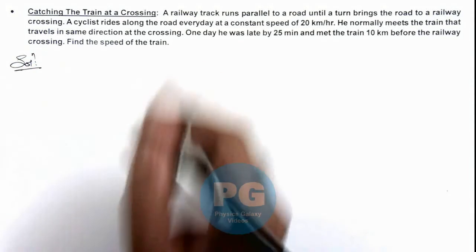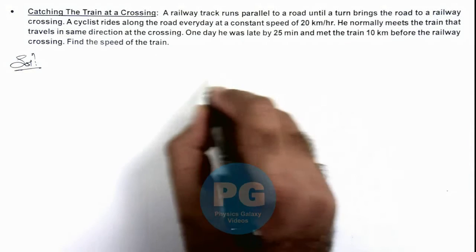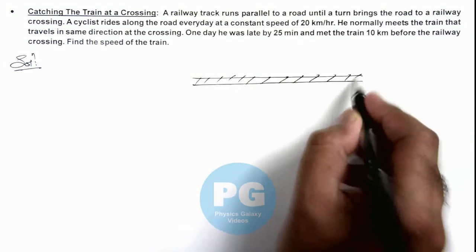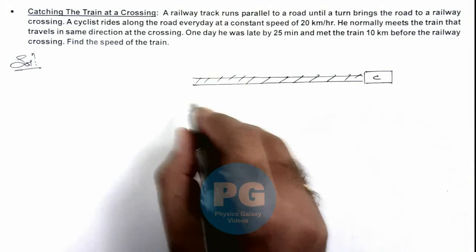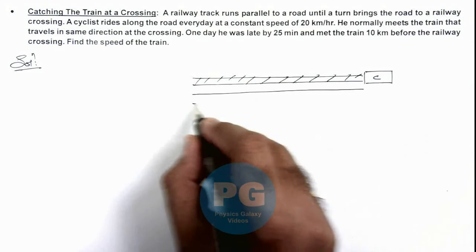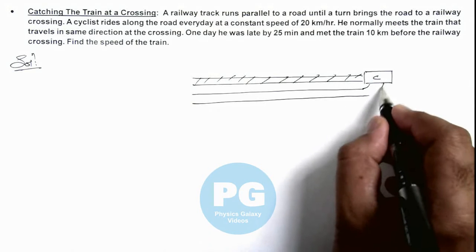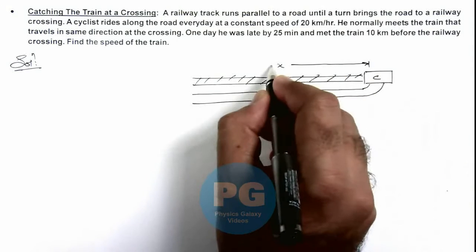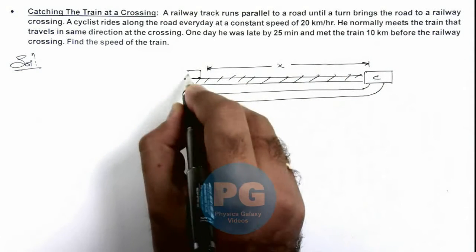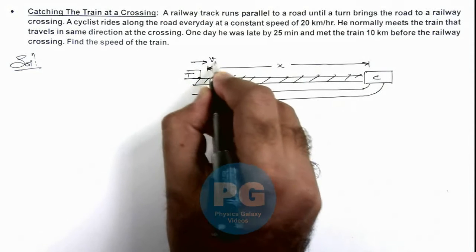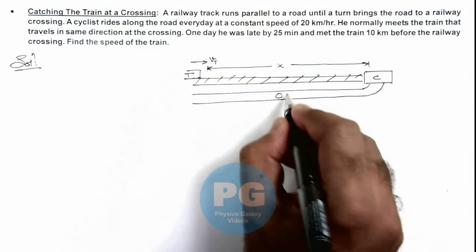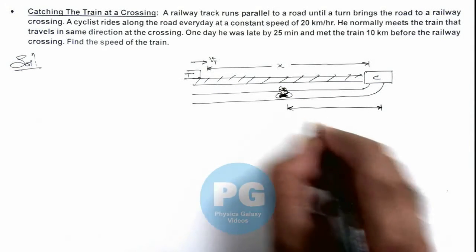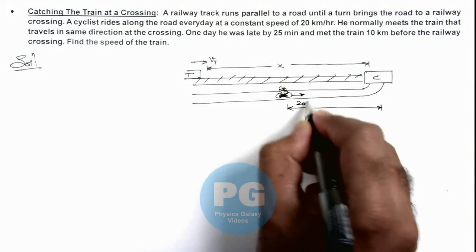Let's draw the picture of this situation to understand it better. Say this is the track of a train, and here is a railway crossing. A road is running parallel to this railway track. Say at an instant, the train is located at a distance x from this crossing, traveling at a speed v_t. And at the same instant, here there is a cyclist located at a distance y from the crossing, traveling at a speed of 20 kilometers per hour.